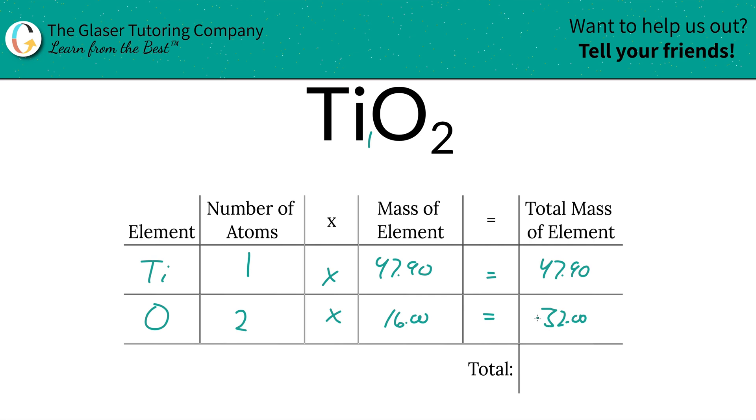And then to find the total mass of the entire compound, we're simply going to add up the total masses of each element. And it works out to be 79.90.